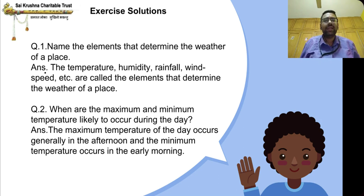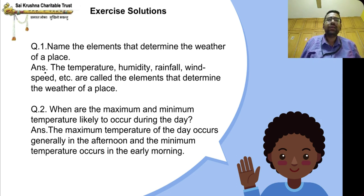The elements once again: temperature, humidity, rainfall, and wind speed — these are called the elements that determine the weather of a place.